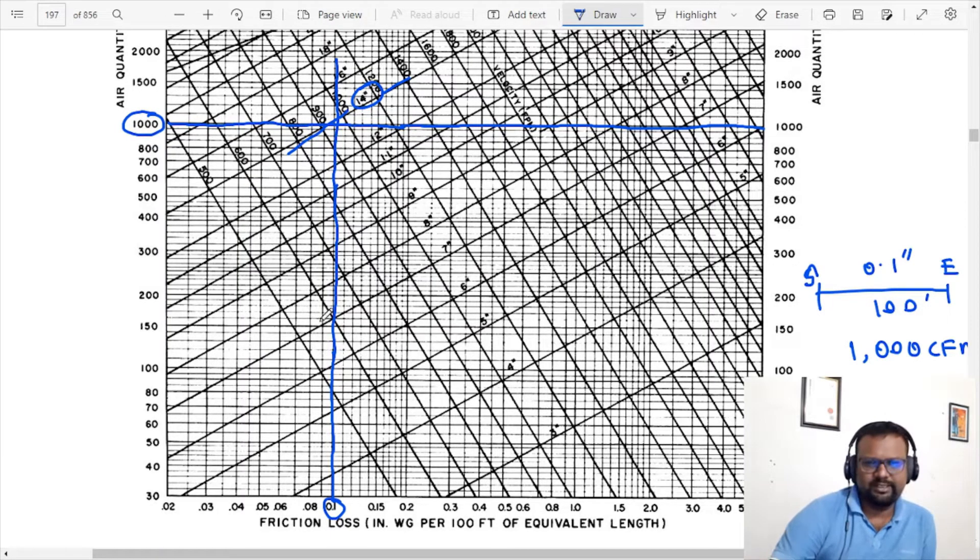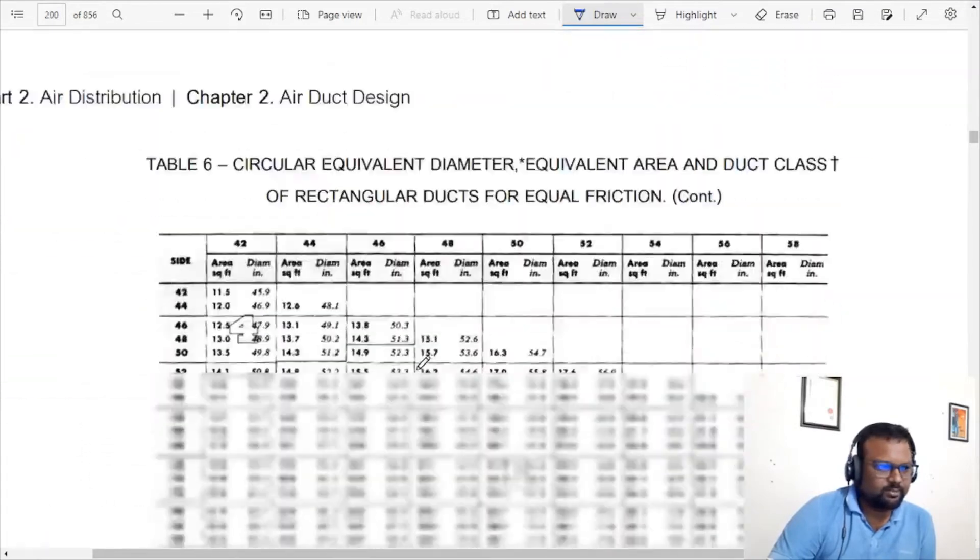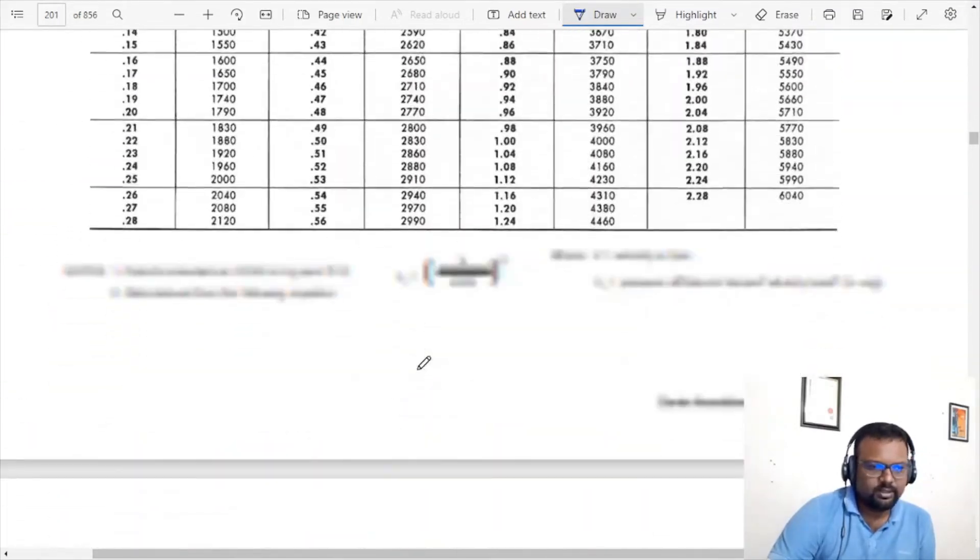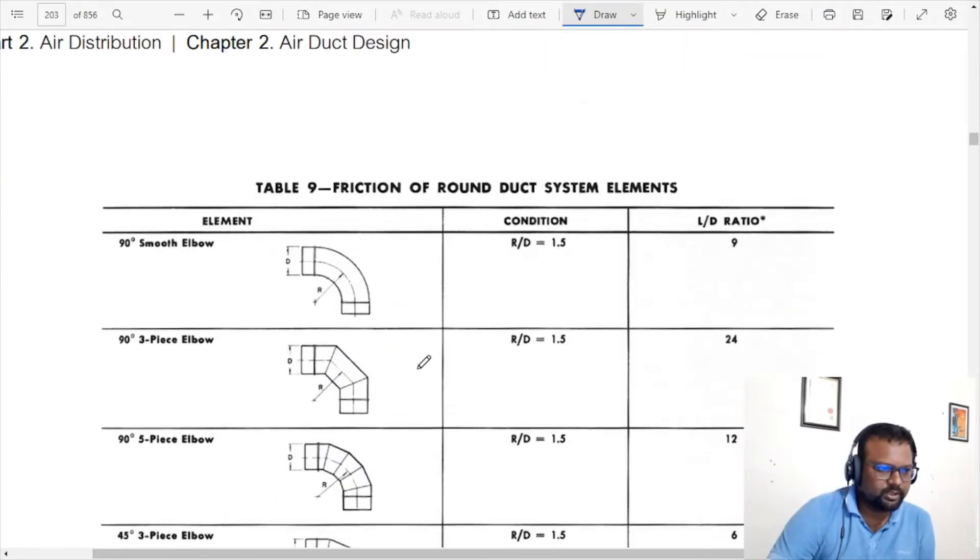So let's say this is a straight duct. We can use the round duct, it's a round elbow. We can also look at the rectangular duct. We can see that friction loss is 0.1 inch of water. So let's go ahead and check out different charts using this one.